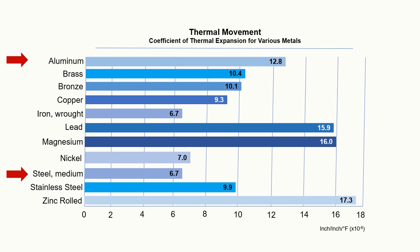By comparison, aluminum has twice the rate of thermal movement of steel roof panels. For the same 40-foot roof, aluminum would expand and contract about one inch — double that of steel. Now that's a lot of movement. If it is not accounted for, serious damage to your roof can take place.